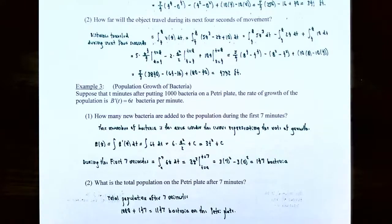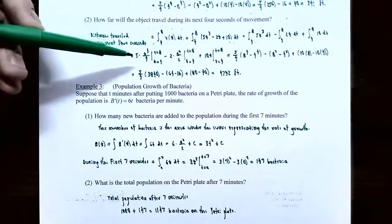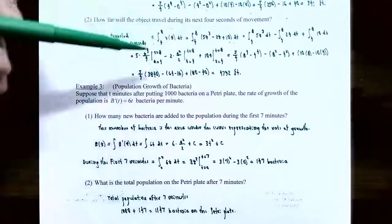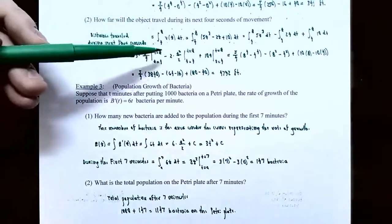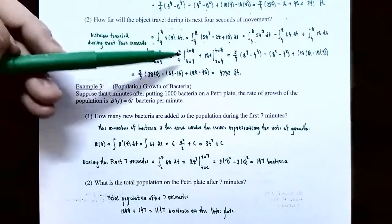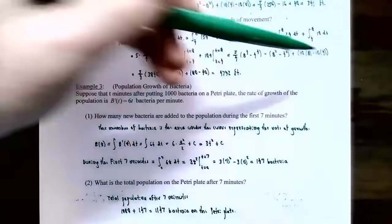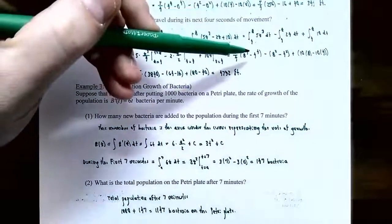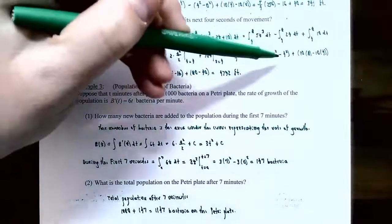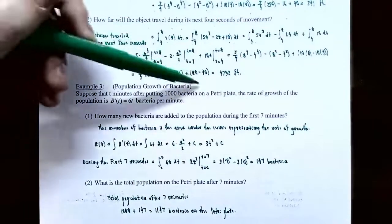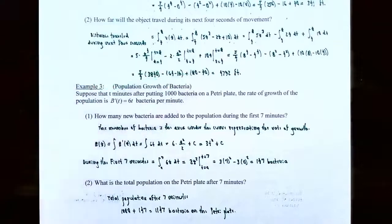Using the Fundamental Theorem: 5 fourths times quantity 8 to the fourth minus 4 to the fourth, minus quantity 8 squared minus 4 squared, plus quantity 10 times 8 minus 10 times 4. Evaluating: 5 fourths times (4096 minus 256) is 5 fourths times 3840; minus (64 minus 16) gives 48; plus (80 minus 40) gives 40. This yields 4792 feet. The object has traveled 4,792 feet between 4 seconds and 8 seconds.